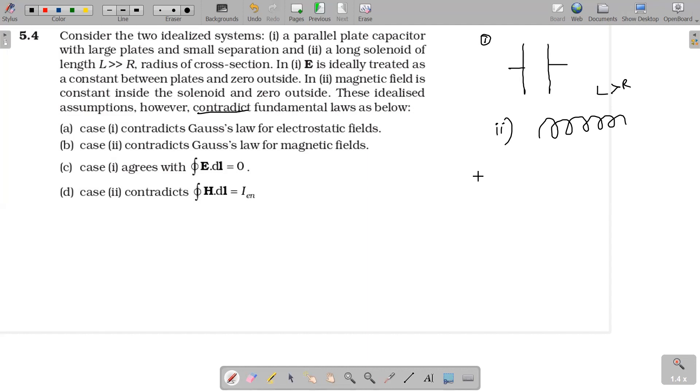In these two cases, in the first case, the E is ideally treated as constant between the plates and zero outside. It's a fact. So when you take infinite long parallel plates, the field is uniform inside and electric field outside is considered as zero, is a correct answer. So first point is correct.